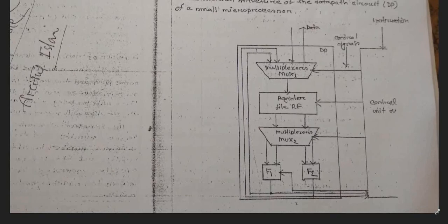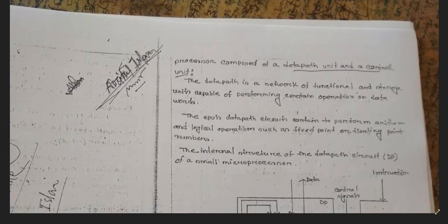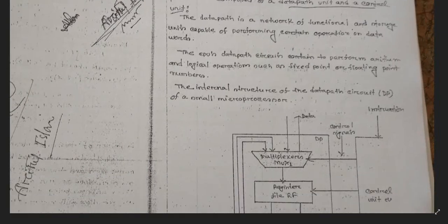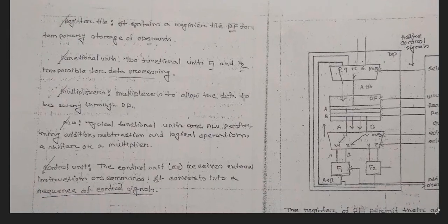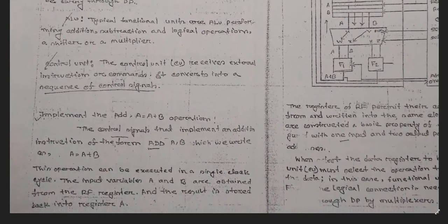In the computer architecture section we have the multiplexing section, the register section, and the multiplexing section again. The data path is a network of function and storage unit capacity of performing certain operations on data words. This diagram is important for your exam. Here are descriptions on register files, the function unit, the ALU unit we have already discussed about, and the control unit we have already discussed about.